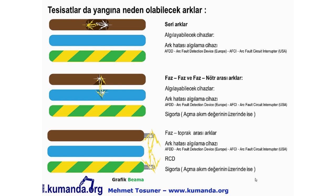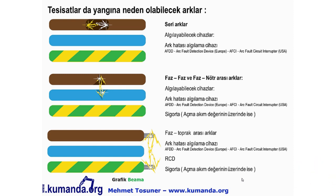Avrupa'da ark hatası algılama cihazları standartlara girdi ve zorunlu hale geldi; ancak Türkiye'de henüz bu cihazlar için herhangi bir konu geçmiyor. Faz-toprak arasında da paralel arklar oluşabilir; bunu algılayacak olan yine ark hatası algılama cihazı, sigortam ya da MCB'dir. Dikkat edecek olursak üç ark tipinden sadece faz-toprak arasındaki kaçak akımları algılayan cihaz RCD'dir.